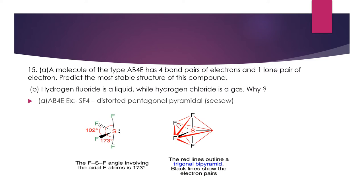Question 15(a): A molecule of type AB4E has four bond pairs and one lone pair — predict its most stable structure. With five electron pairs, the expected shape is trigonal bipyramidal, but one is a lone pair. According to VSEPR theory, lone pair–bond pair repulsion is greater than bond pair–bond pair repulsion, so the shape is distorted. An example of this type is SF4, which has a see-saw (distorted) structure.